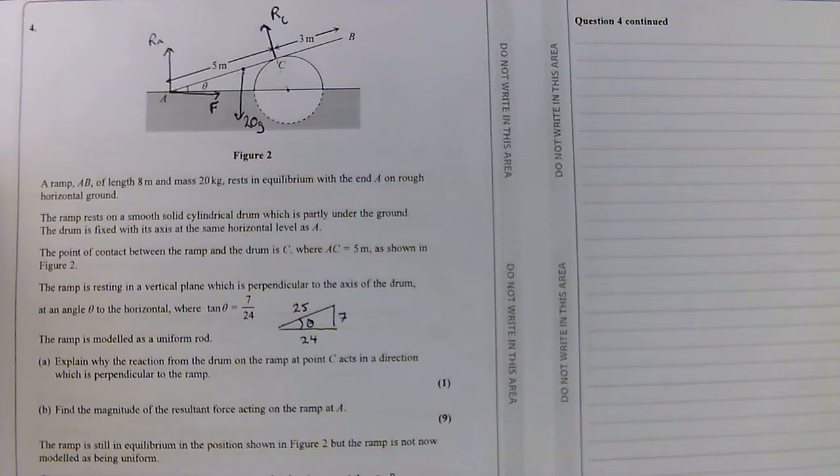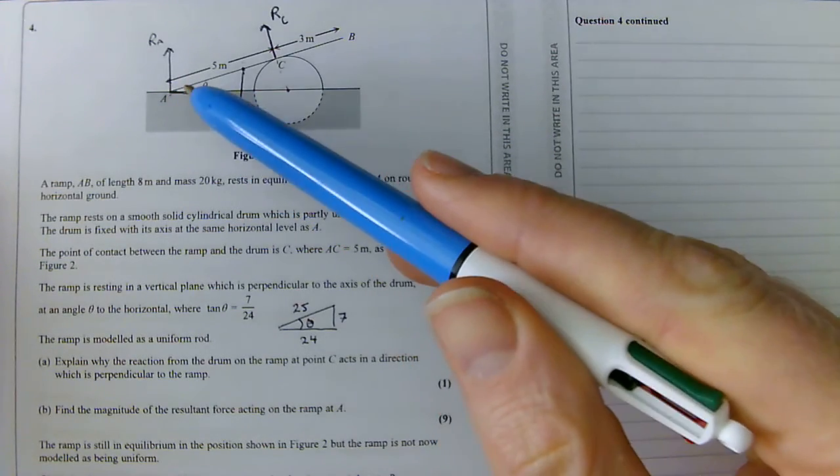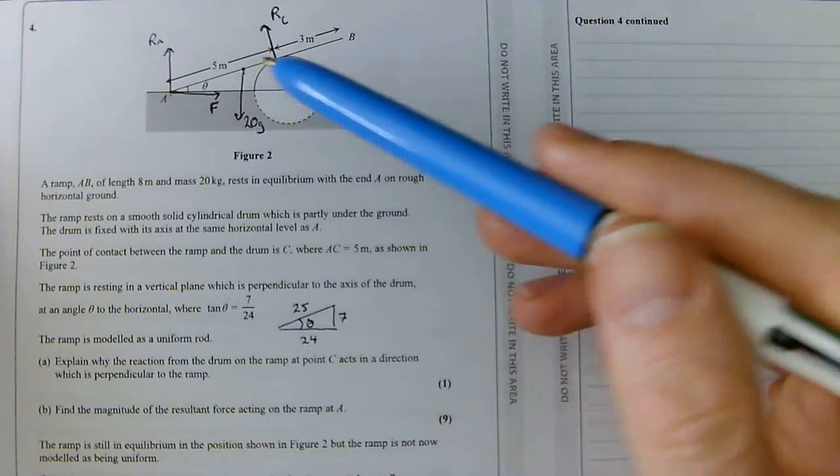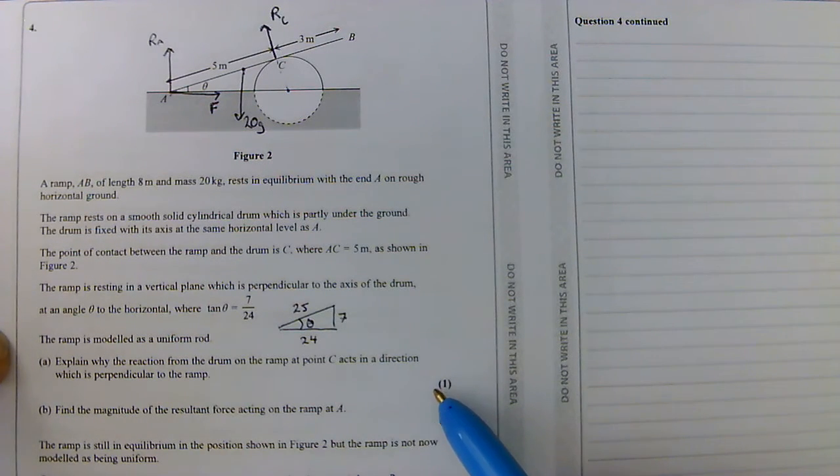The way I'm going to do these questions is totally standard. You start by taking moments around this pivot point, A, and then once you've done that, you're going to resolve your forces in a horizontal and a vertical direction. It's always the same for the static rigid bodies questions.